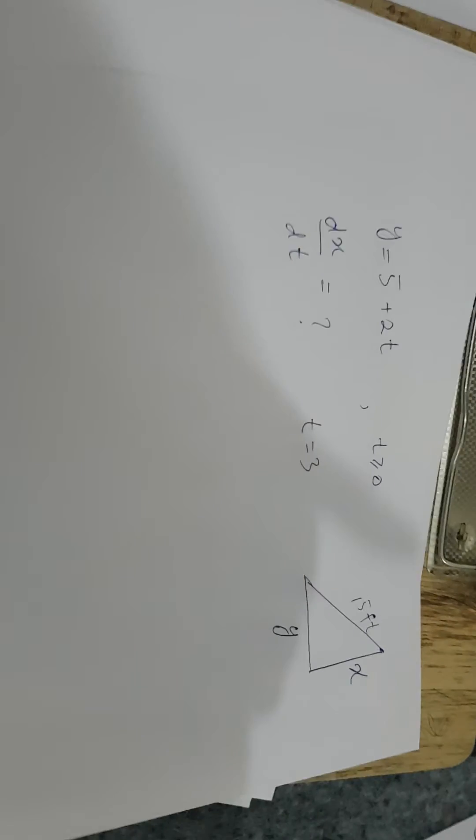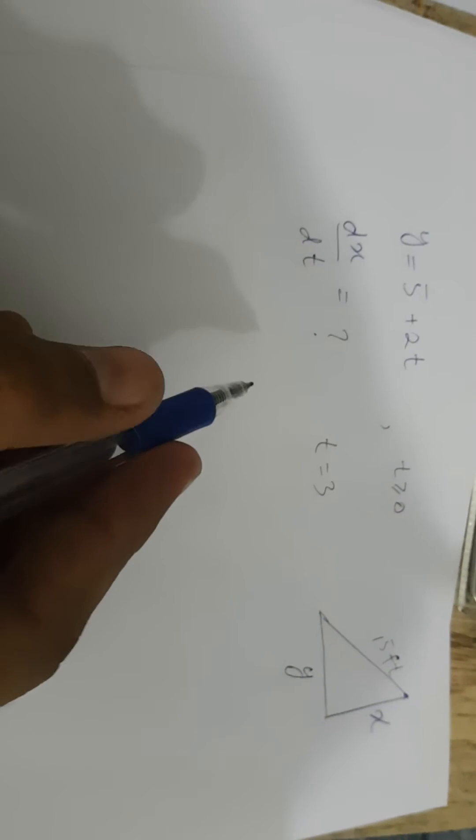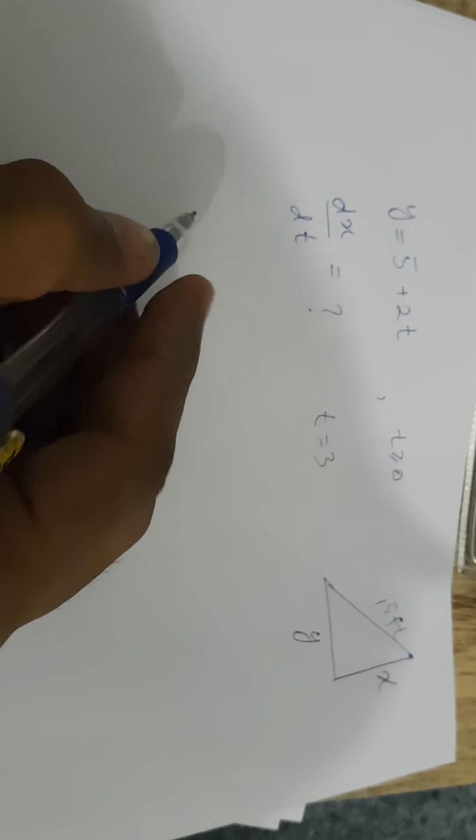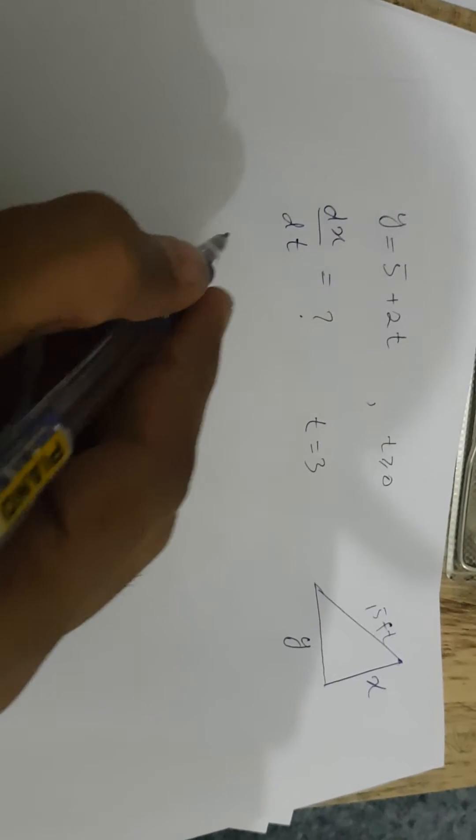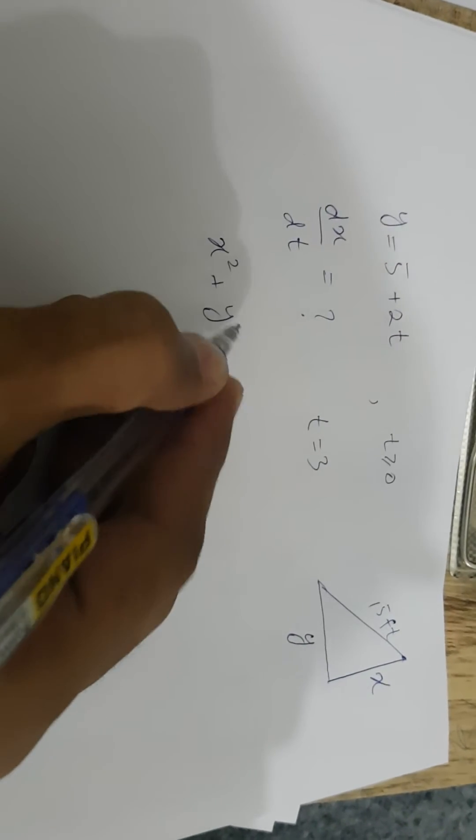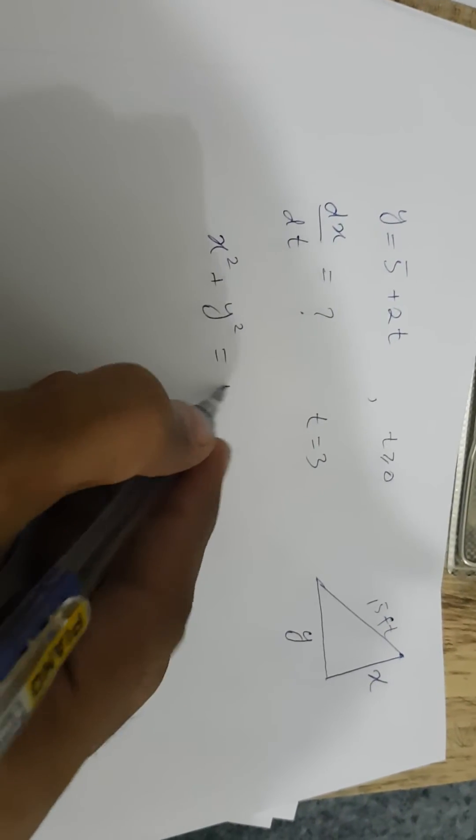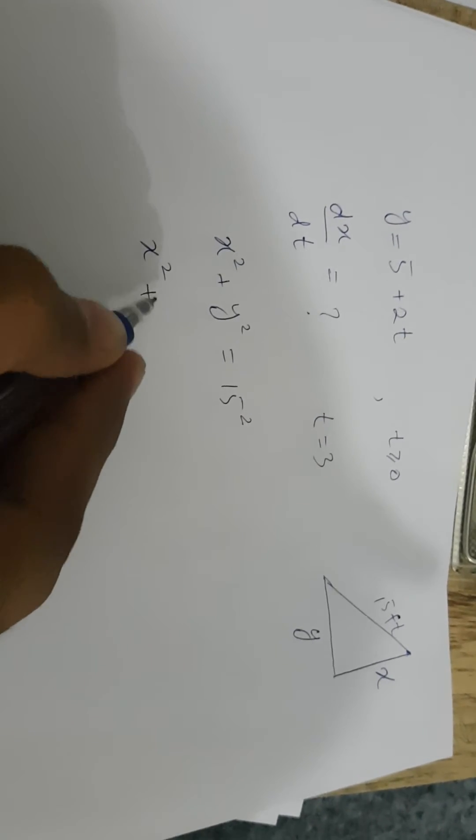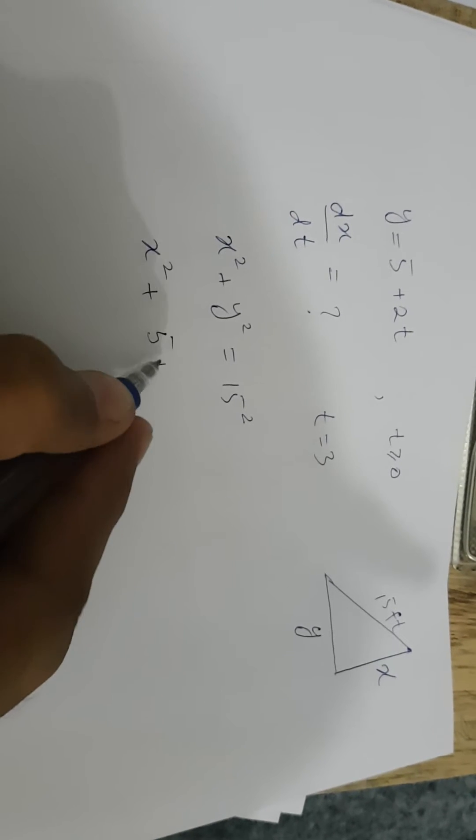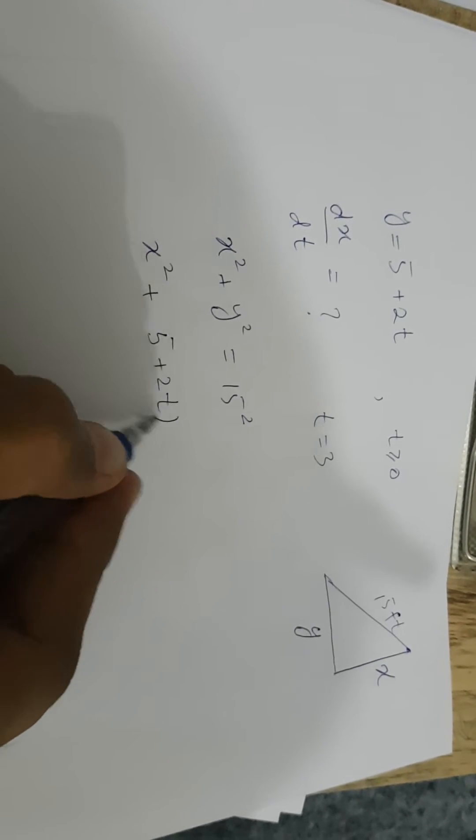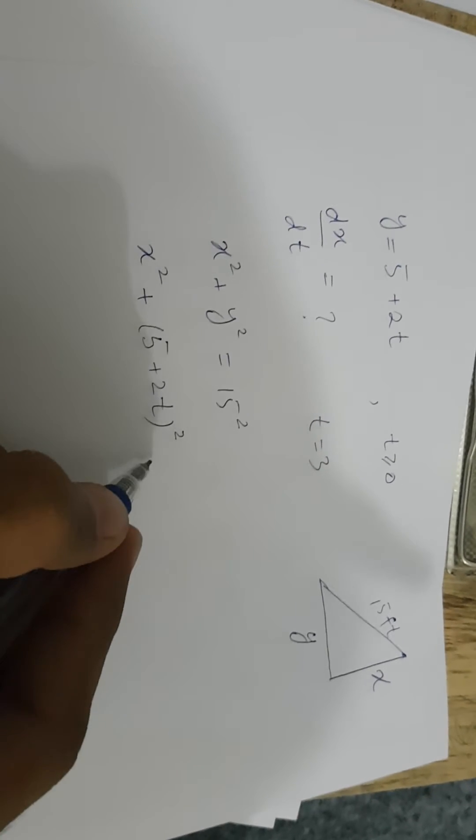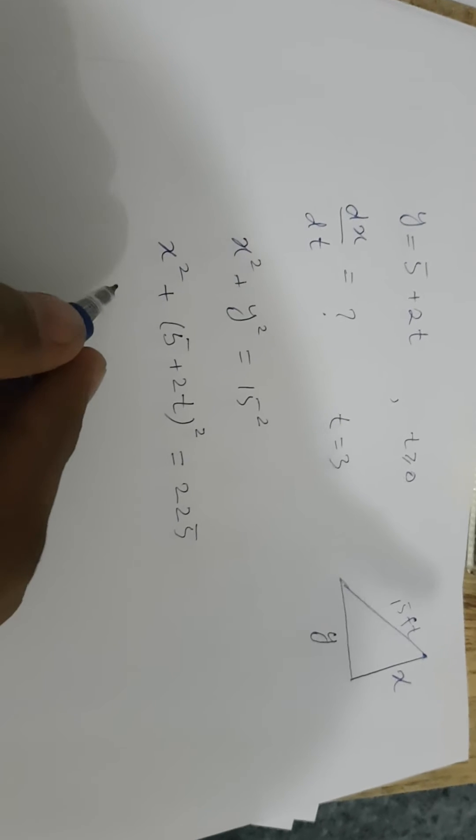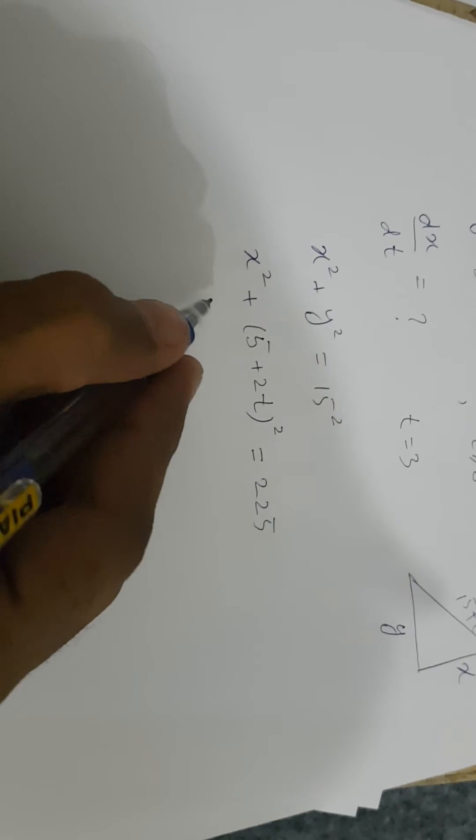We have to find dx/dt at t equals 3. From the picture, by using the Pythagorean theorem, we have x² + y² = 15² = 225. From here, x² = 225 - (5 + 2t)².